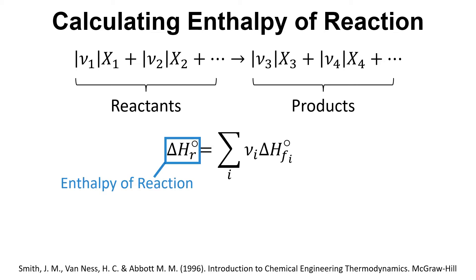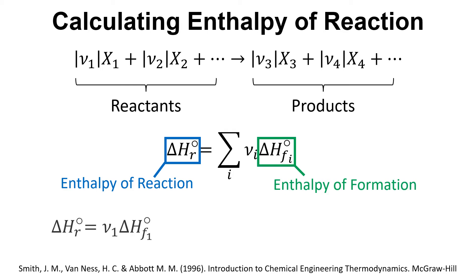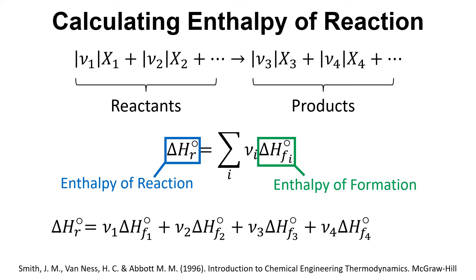So looking at this, we have the enthalpy of reaction expressed in terms of the enthalpy of formation. Delta Hr equals the stoichiometric coefficient for the first reactant multiplied by its enthalpy of formation, and we just keep adding on these terms for all of the reactants and all of the products.